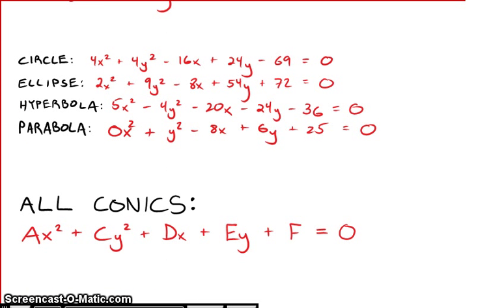So there are a couple of things to look for in this general equation to determine what sort of conic you're dealing with. It turns out that circles will always have A and C equal to each other. 4 and 4 gives you a circle. For ellipses, hyperbolas, and parabolas, they're different.